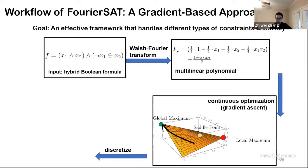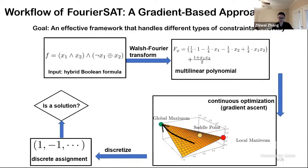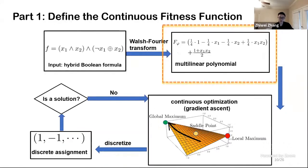Then we will be able to do continuous optimization based on some gradient approaches. We may end up converging to global maximum, local maximum, or saddle points. But no matter which point we converge to, we can always discretize it to check if it is a solution or not. If not, we just go back and do random restart. In the rest of this talk, I will be decomposing this framework into different pieces and show you how each component actually works.